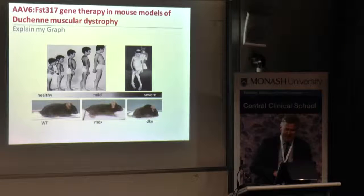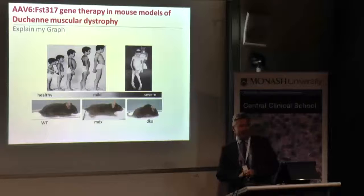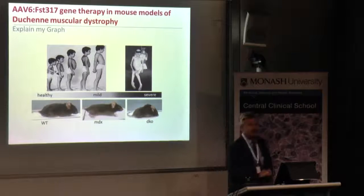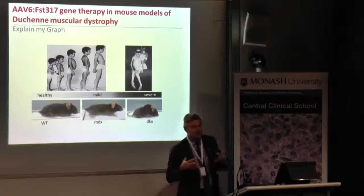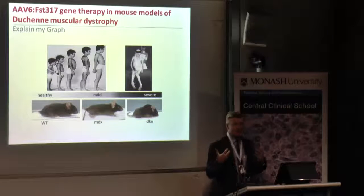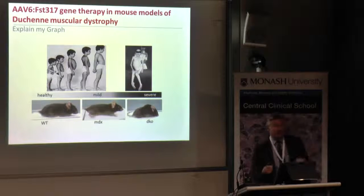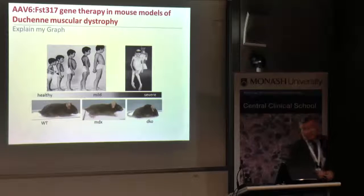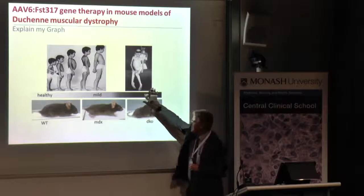So, gene therapy in mouse models of Duchenne muscular dystrophy. As you can see, the top graph here is not the evolutionary tree of mankind — this is actually a photograph of a growing child with muscular dystrophy. You can see the abnormal posture of the child due to a genetic defect in the muscles that prevents them from forming and developing strongly. In its very severe form, you see here, and certainly no humour associated with that slide.